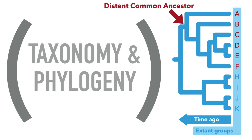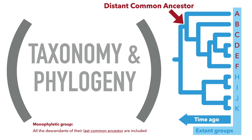Importantly, all the groups I showed so far are monophyletic. When delineating collections of extant groups, for example to define taxa, this is a very important concept we need to understand: monophyly. A group is said to be monophyletic if all the descendants of their last common ancestor are included in the group. For example, the last common ancestor of A through F is marked here with an arrow, and we can see that all of their descendants are part of the group.